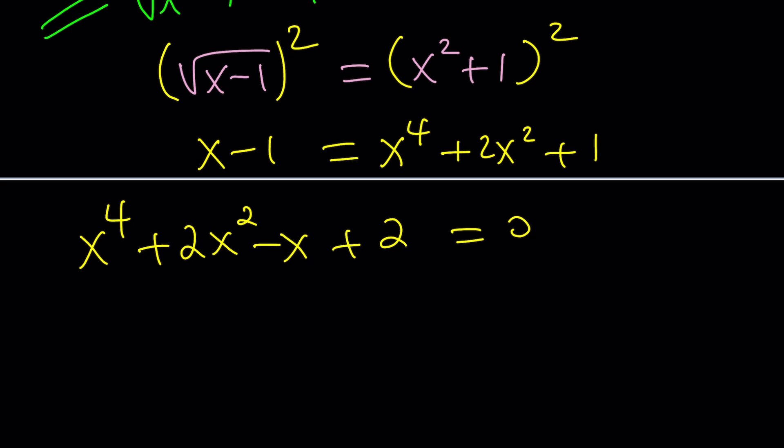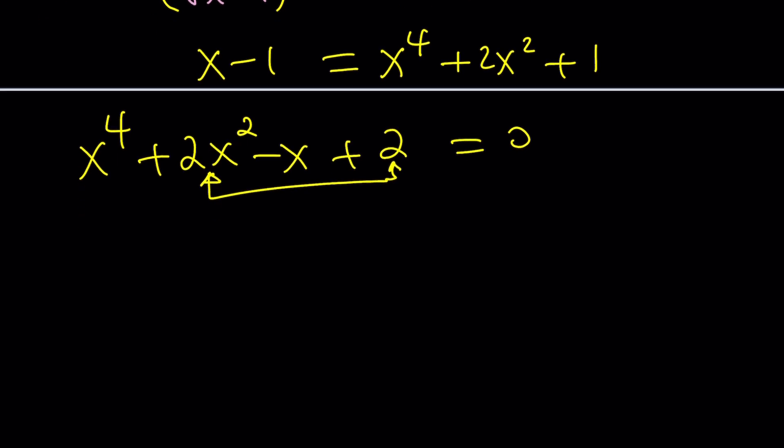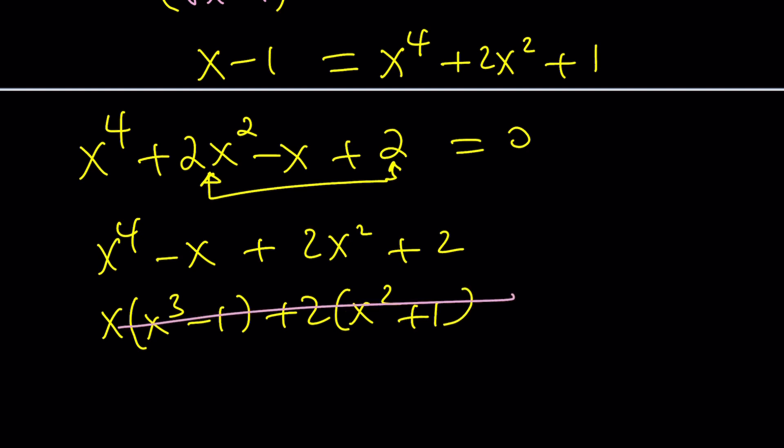Let's go ahead and put everything on the same side. We get x to the fourth plus 2x squared minus x plus 2 equals 0. This kind of looks factorable, isn't it? Let's give it a try. I think we can factor this by grouping. For example, I kind of want to put these two terms together because they both have two. So maybe I can split it up like this. Separate them. And now x factor out x cubed minus 1, two factor out x squared plus 1. Our method failed, but at least we tried.